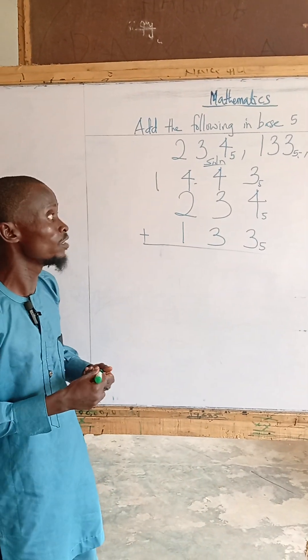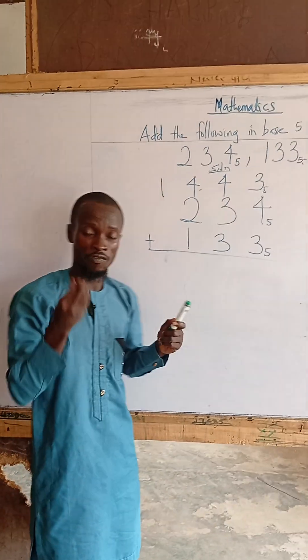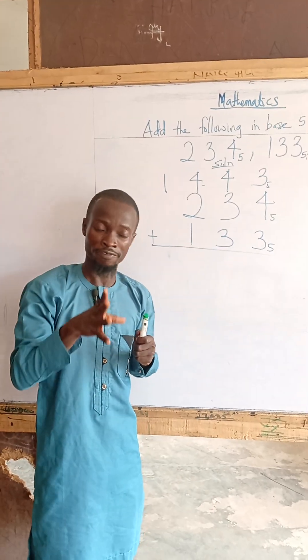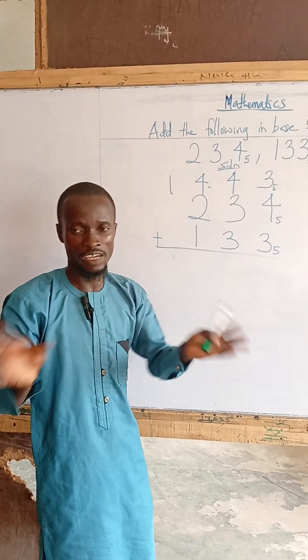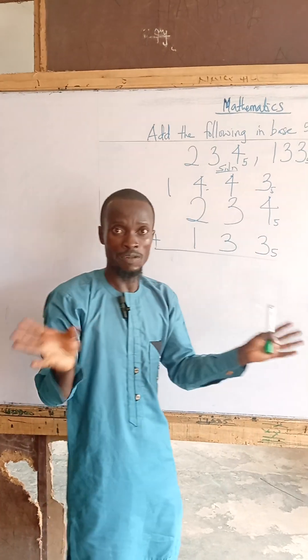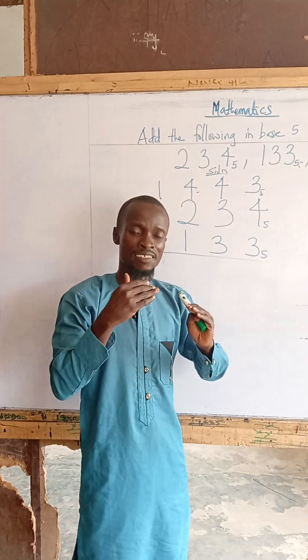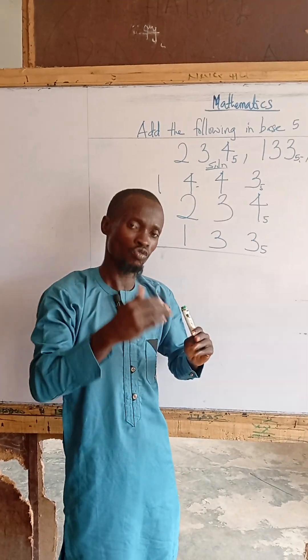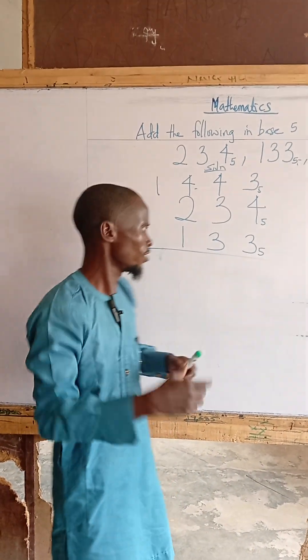It's very easy to add. If a number is in base 5, we must not see 5 there. The only digits we can see are 0, 1, 2, 3, and 4.